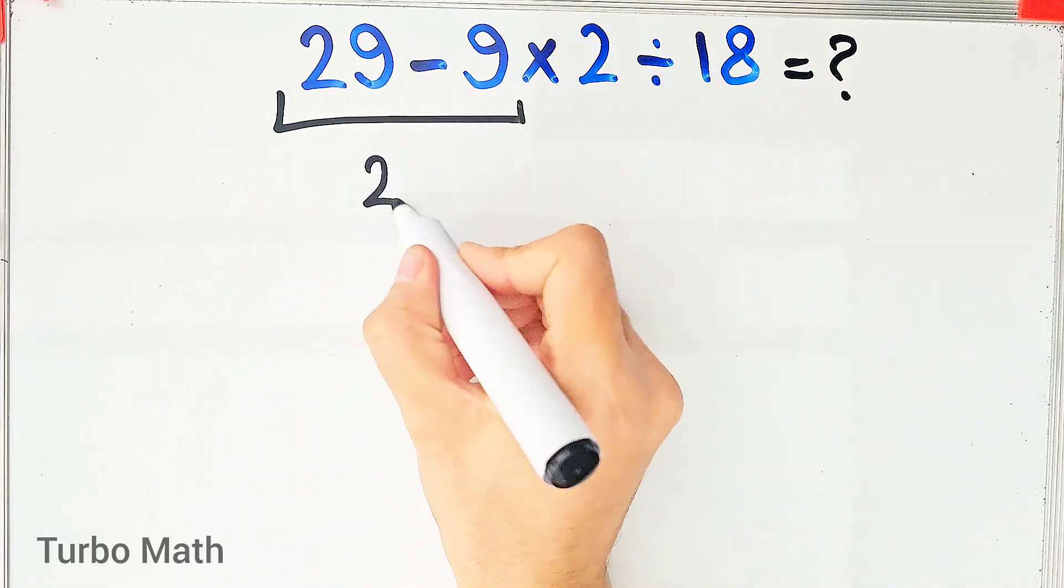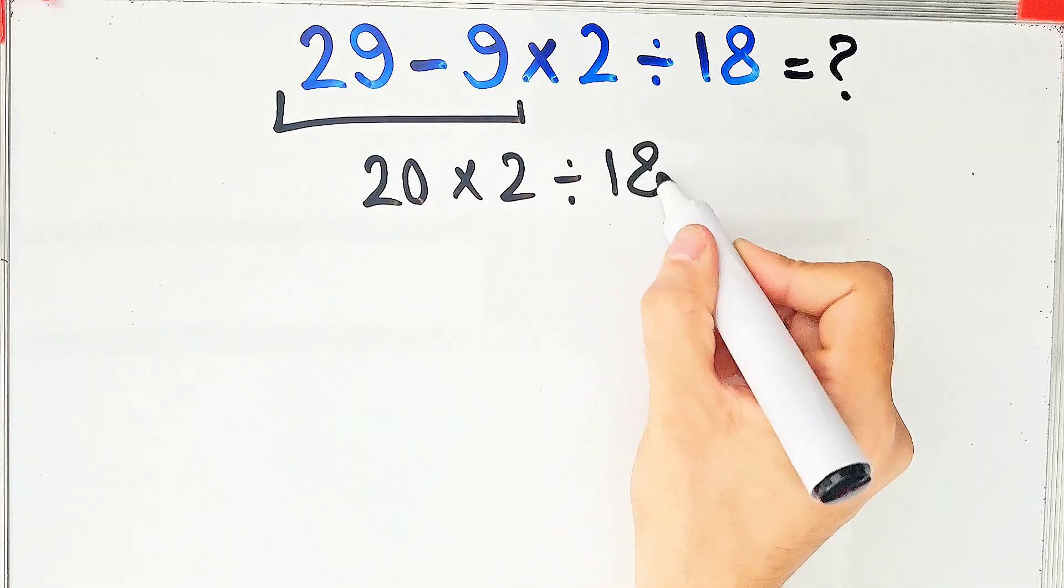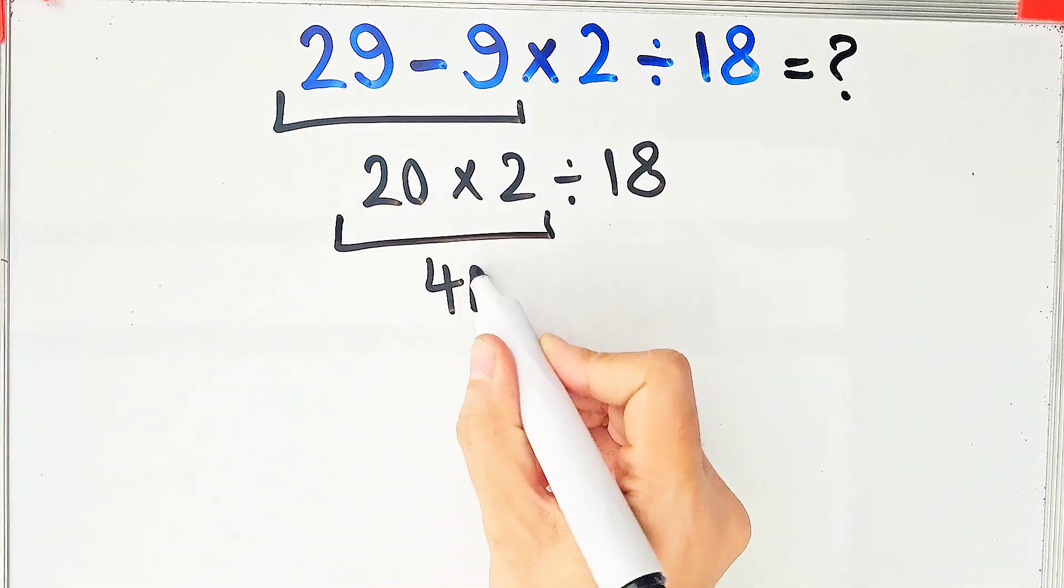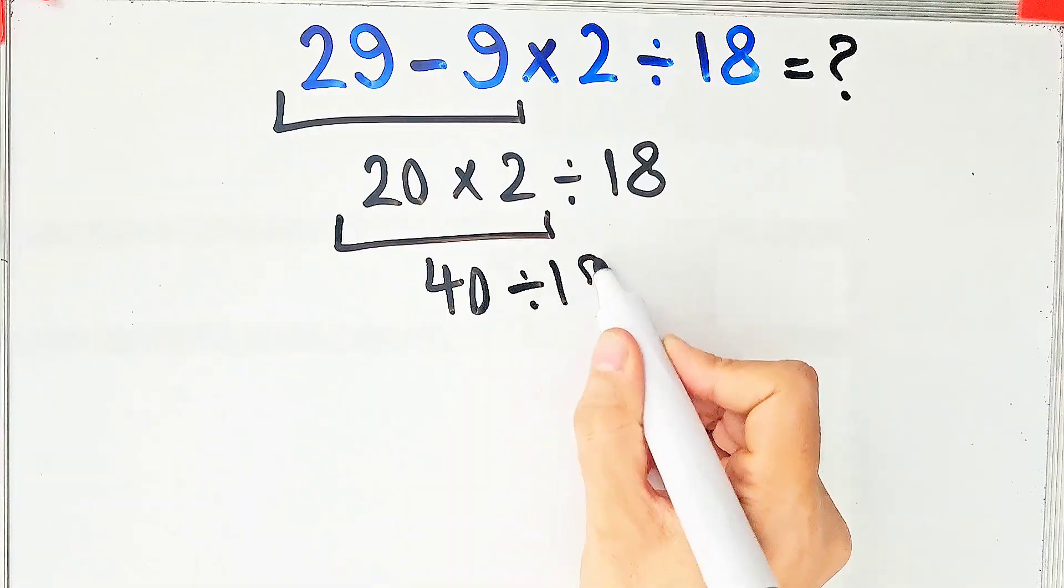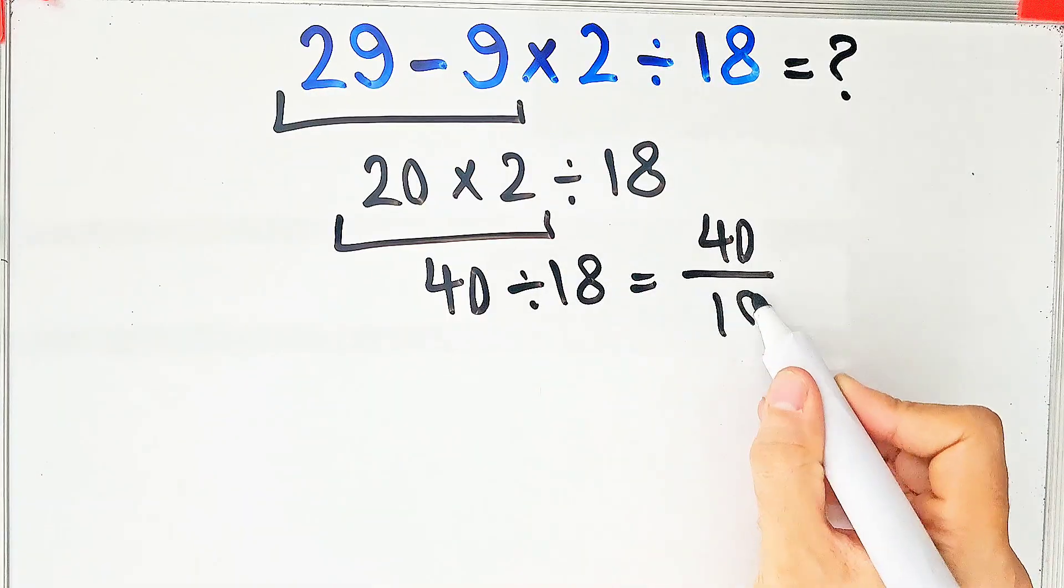29 minus 9 equals 20. 20 times 2 then divided by 18. 20 times 2 equals 40 and 40 divided by 18 equals 40 over 18. But this answer is definitely wrong.